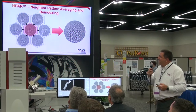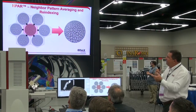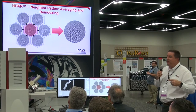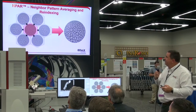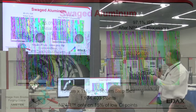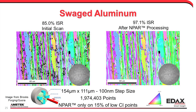We can also apply our N-PAR technology, where we spatially average neighboring patterns with the collected pattern to improve signal-to-noise. From a deformed aluminum sample collected at high speeds with about 85% indexing success rate, we apply N-PAR only to the 15% of points with a low confidence index. After applying it, we get 97% indexing success rate with visible improvement in pattern quality.